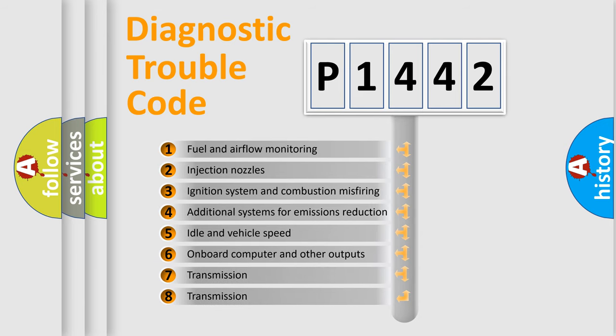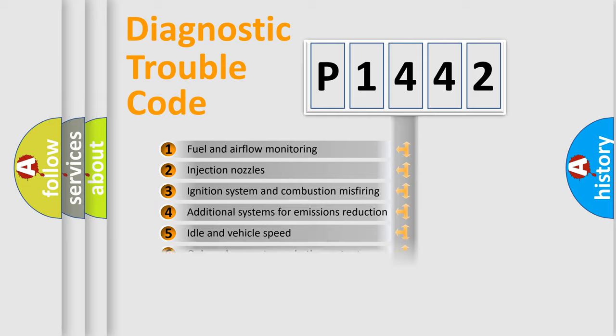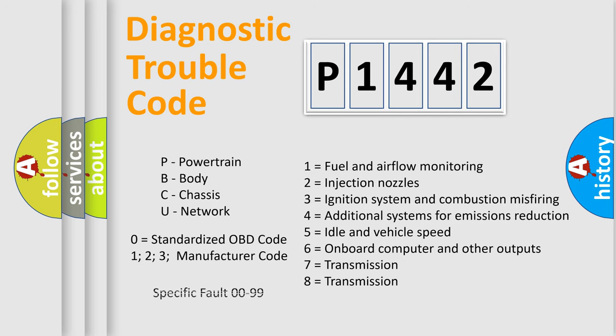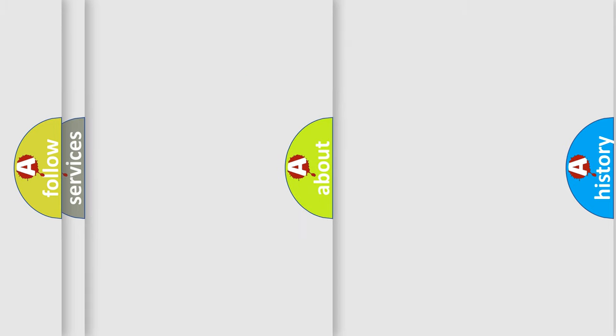The third character specifies a subset of errors. The distribution shown is valid only for the standardized DTC code. Let's not forget that such a division is valid only if the other character code is expressed by the number zero. Only the last two characters define the specific fault of the group.